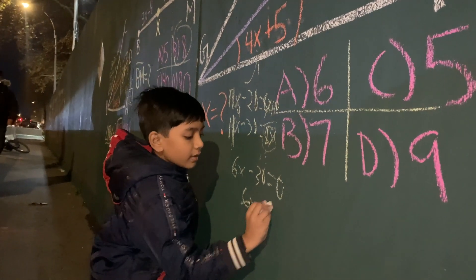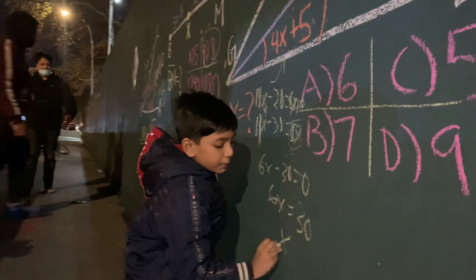That means 6x is 30, and x thus will become 5.